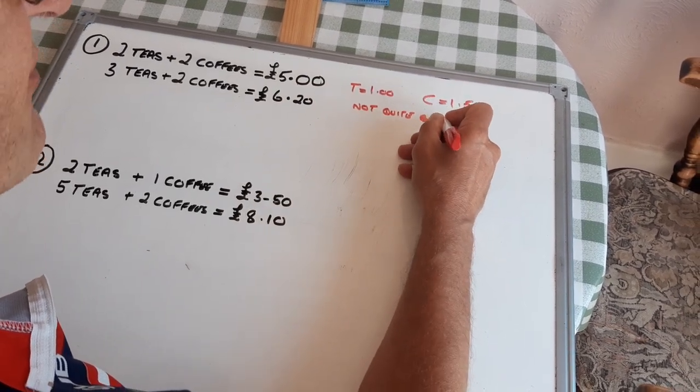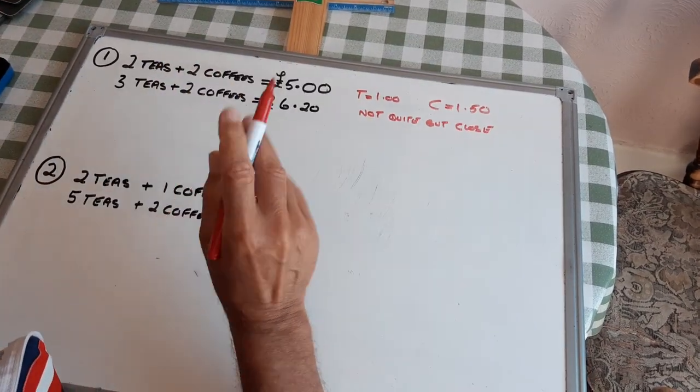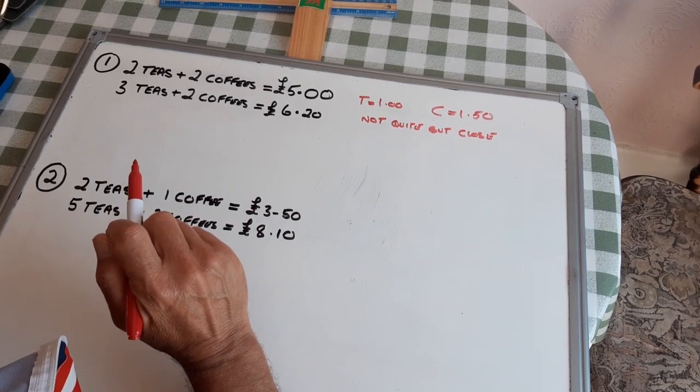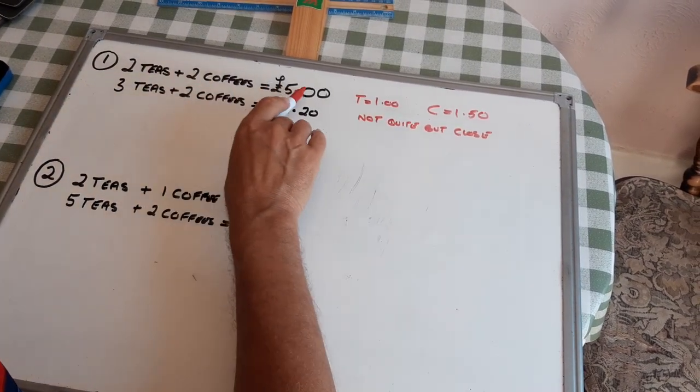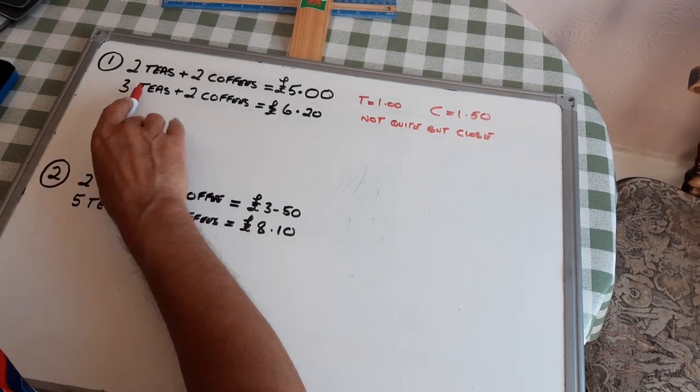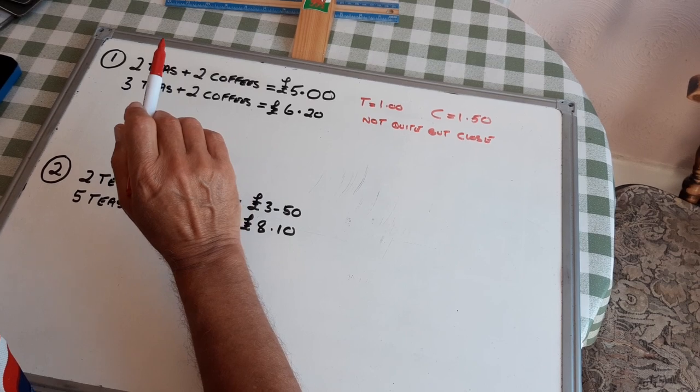You could then change your price of coffee and try again. But I'm going to show you a cleverer way. Two teas and two coffees is £5. Three teas and two coffees is £6.20.